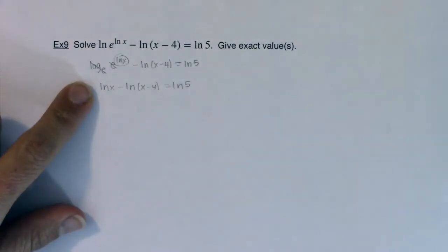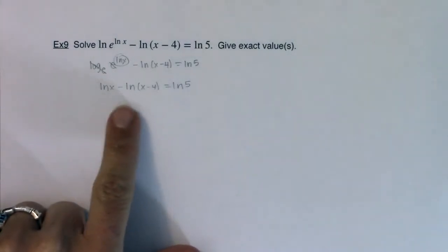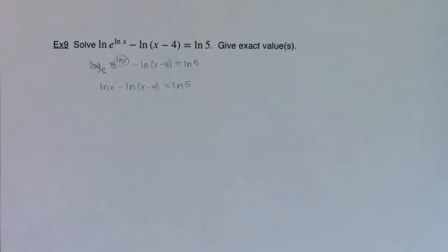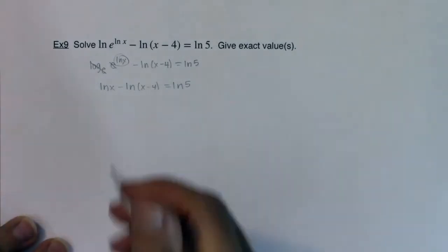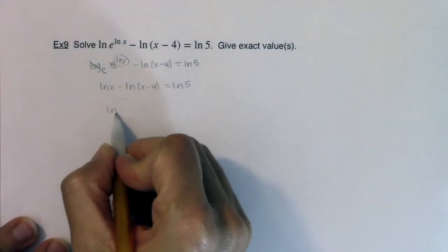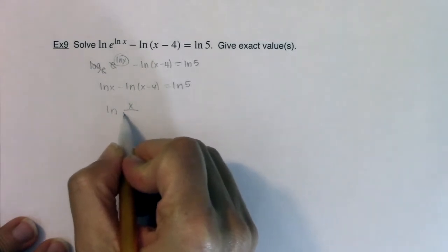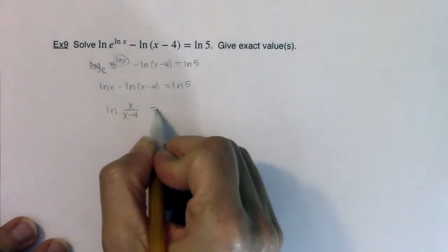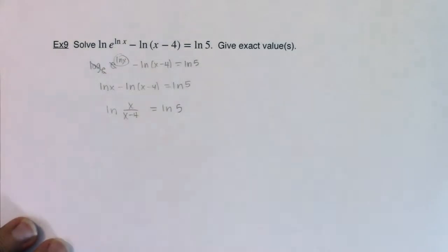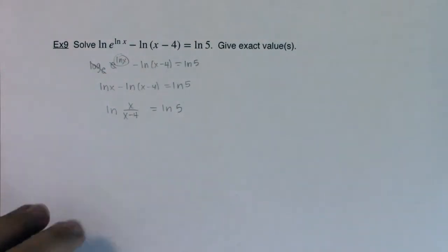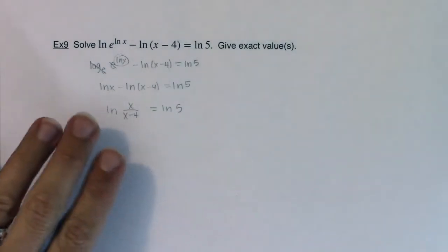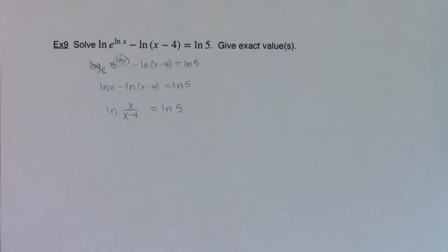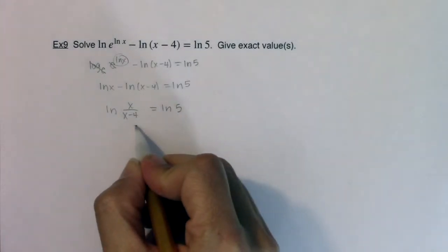I still have logarithms on both sides, but I need to simplify this to a single logarithm. Well, I can use the quotient property for logs. I can collapse this into ln of x over x minus 4, and that should be equal to the natural log of 5. So when you have a logarithmic equation and you have logs on both sides and they're the same base, then their arguments have to be the same also, and this simplifies a little bit.